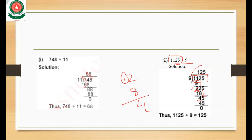We bring down 5, and multiply 9 times 5 which is 45. So 45 minus 45 equals 0. When you divide 1125 by 9, the answer is 125.